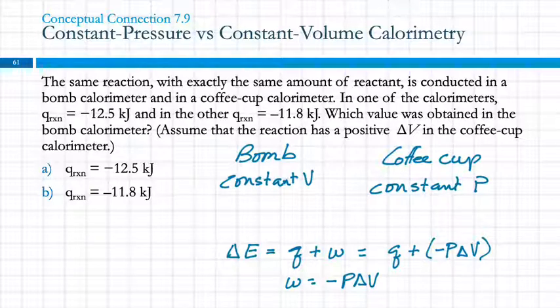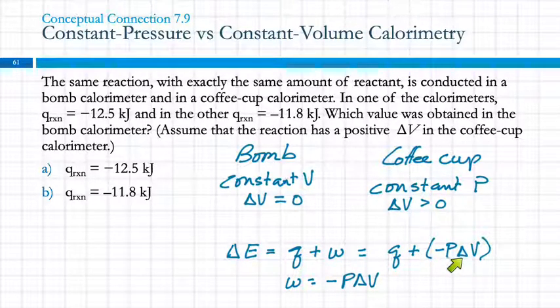Which one of these has delta V equals zero? Which one has constant volume? The bomb. Because it can't change its volume. So, delta V equals zero. Here, the change in volume, it says assume the reaction has a positive delta V. So, here delta V is greater than zero. So, in the bomb calorimeter, this term goes to zero, and the change in energy is equal to Q.